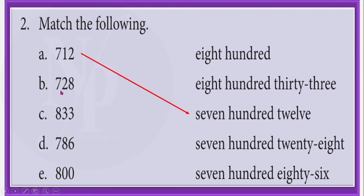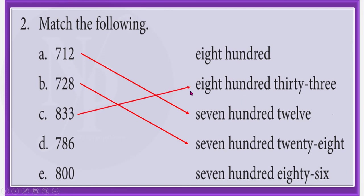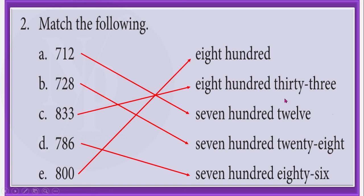Likewise, here we have 728. Search for 728 in the other column. So 728 is found here, and we should match these two. And in C, we have 833. Search for 833 in the second column. Here we have 833, so let us match the numeral and the number name by drawing a line. Coming to D, we have 786. Search for 786 here, and here it is. Let us draw a line to match these two. Finally, in E, we have the number 800, and the number name is here. We should match by drawing the line. Similarly, you also should draw the lines and match the numbers in your textbook.